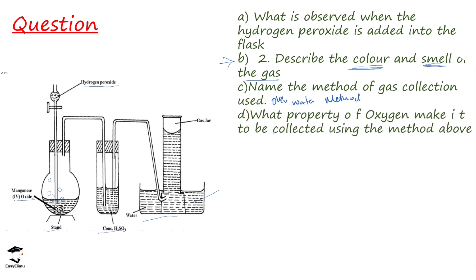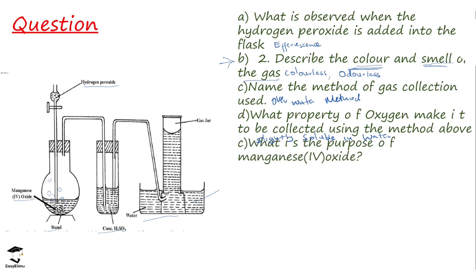The next question asks: what property of oxygen makes it possible to collect it using the over-water method? The answer is that oxygen is slightly soluble in water, which makes this method possible. Then, what is the purpose of manganese(IV) oxide? Manganese(IV) oxide is used as a catalyst to speed up the reaction.